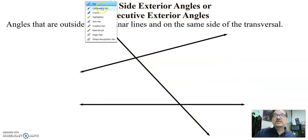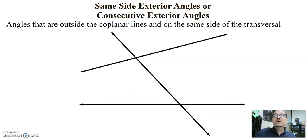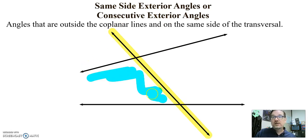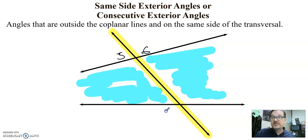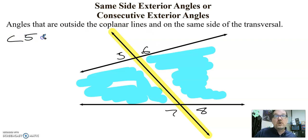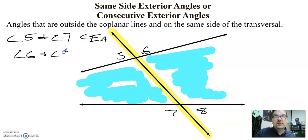If we have same side interior, it only makes sense that we have same side exterior. To find the same side exterior angles, highlight the transversal and shade on the inside. The exterior angles are five, six, seven, and eight. I need them on the same side — consecutive side — of the transversal. Angle five and angle seven are consecutive exterior angles. Angle six and angle eight are also consecutive exterior angles. Two pairs.